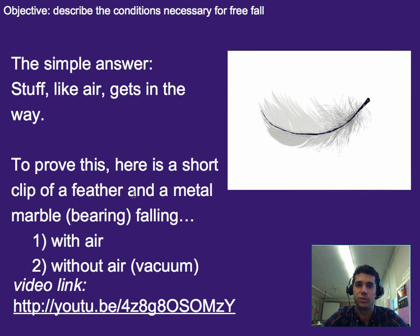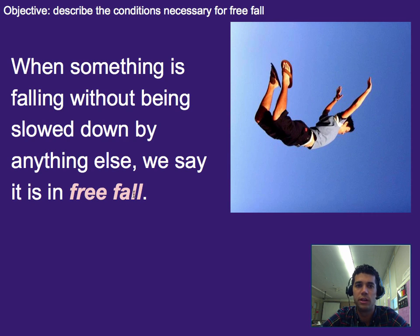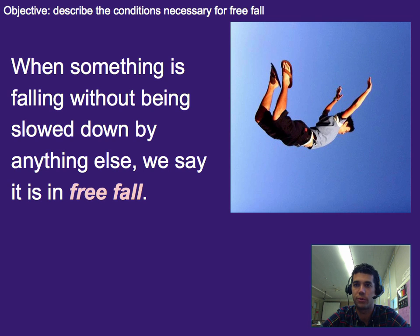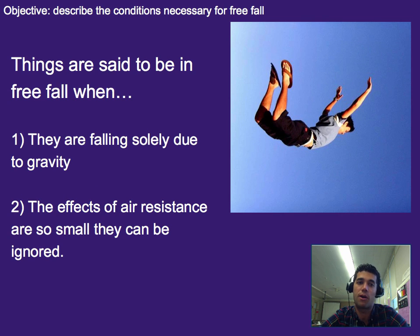That brings us back to our original objective: describing the conditions necessary for free fall. When something is falling without being slowed down by anything else, we say it is in free fall. This boy right now is probably in free fall or really close to it — there might be a little air in the way, but the air is not significantly affecting his motion or how fast he accelerates. Things are said to be in free fall if they are falling solely due to gravity — no rocket attached to their back, no wings — and the effects of air resistance are so small they can be ignored.